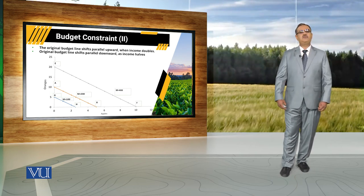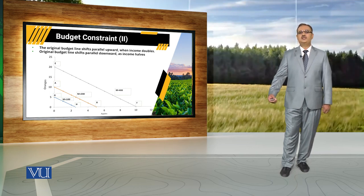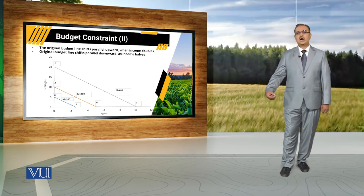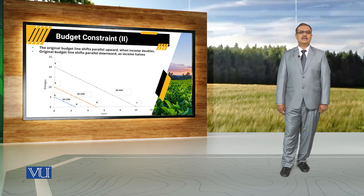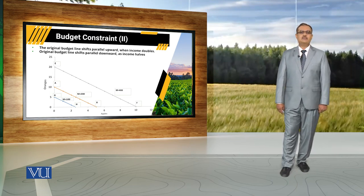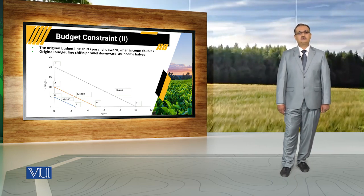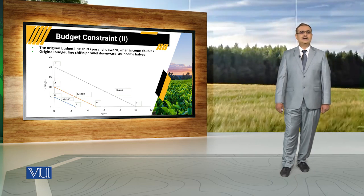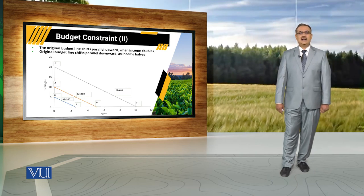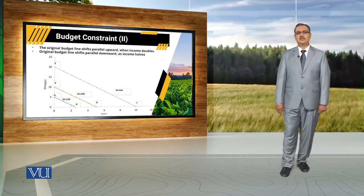So, if income of the household increases, the budget line will shift outward. If income of the consumer decreases, the budget line will shift downward. When there is no change in prices, an increase or decrease in income results in a parallel shift of the budget line.